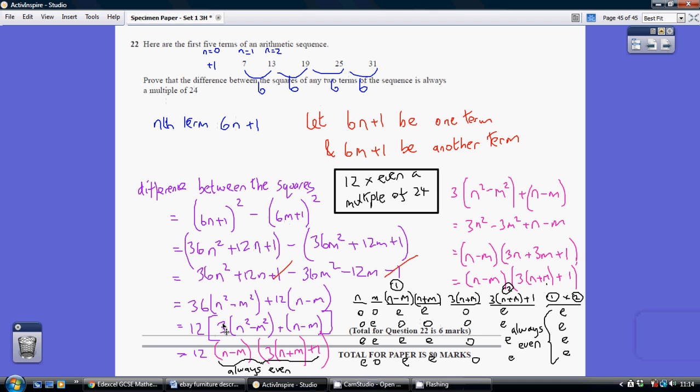The next bit is very difficult. Now, in order to prove that it's a multiple of 24, we need to prove that this bit in the square brackets is always even. Because if this is always even, then 12 times an even number is always going to be a multiple of 24.